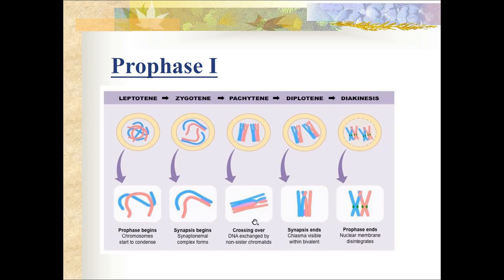The homologous chromosomes of each pair begin to separate but do not separate completely - they remain attached at some points forming an X-shaped arrangement called chiasmata. The chromatids break at these points and the broken segments may get interchanged - this process is called crossing over. As a result, genetic recombination takes place.